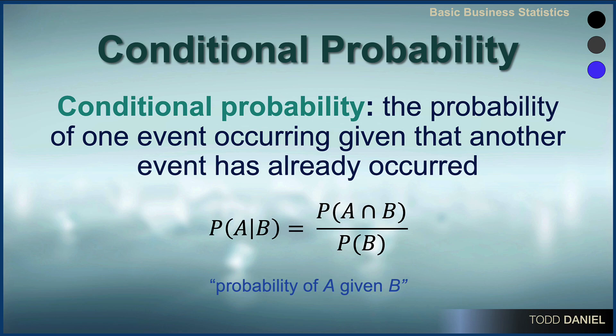Mathematically, it is the probability of the intersection of A and B divided by the probability of event B.